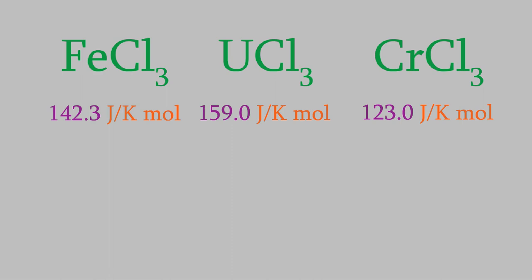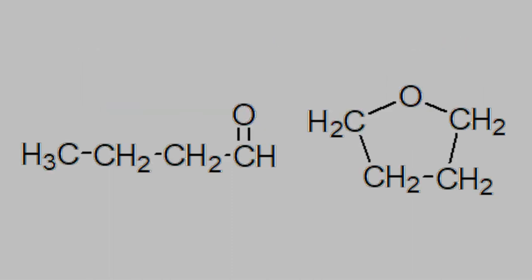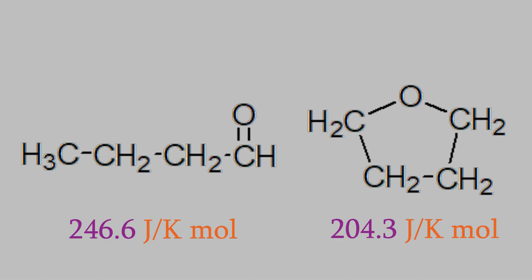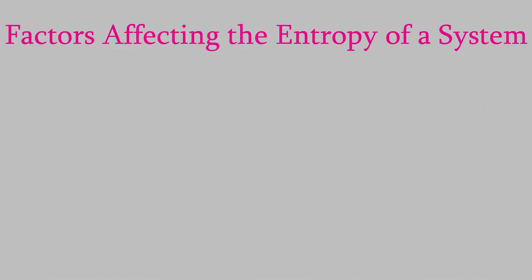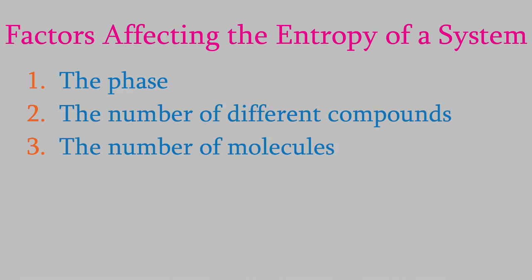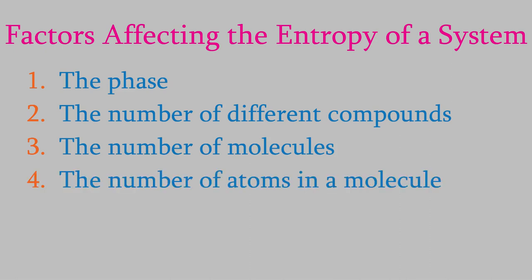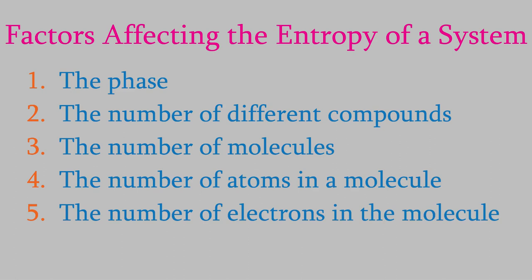Finally, the structure of a molecule can also affect its entropy. Consider two isomers that have exactly the same atoms and therefore the same number of electrons. However, the second molecule has a ring, which prevents the single bonds between the carbons from freely rotating. Since the first molecule has carbon-carbon bonds that can rotate, it can have many different conformations, so it has a higher entropy. To sum up, there are several factors that affect the entropy of reactants or products. In decreasing order of importance: the phases of the compounds, the number of different compounds, the number of molecules, the number of atoms of different types, the number of electrons in the atoms, and the presence of rings or multiple bonds.